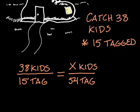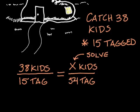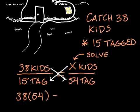These amounts should be proportional, meaning we set the two fractions equal to each other. If we solve for x, that should give us the total number of kids, or at least a good estimate. Since we have a fraction equal to a fraction, we can cross multiply — taking the top of one fraction times the bottom of the other — and set those two amounts equal to each other. So we end up with 38 times 54 equal to 15 times x.